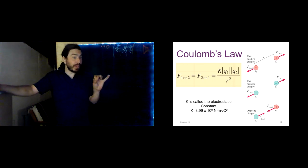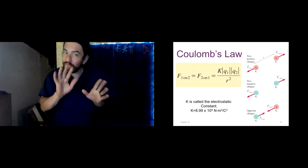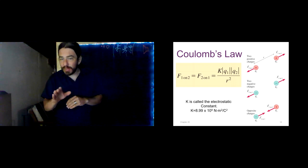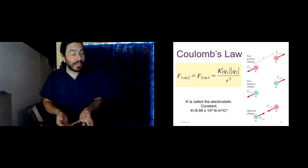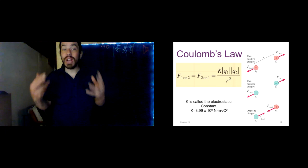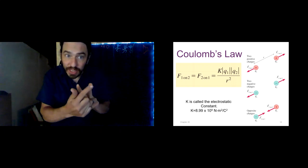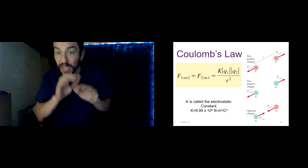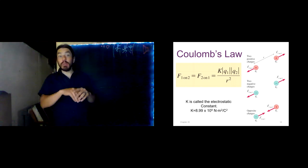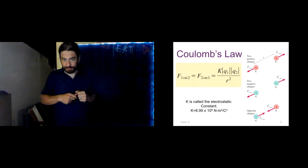Electrical forces are also long-range, similar to gravity. But something very different is that there's only one type of mass — only positive mass — and we only have attractive gravitational forces. With electricity, we can have attractive or repulsive forces, and we have two kinds of charge: positive and negative. This equation helps us calculate the magnitude of the forces between two charges.